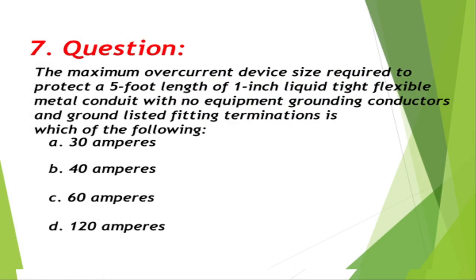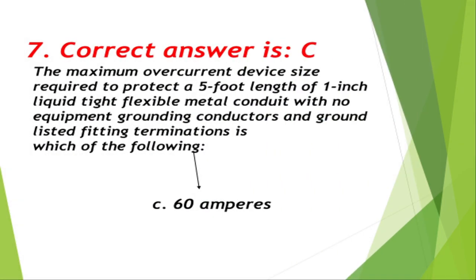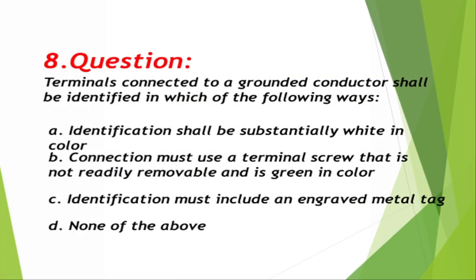Question number 7: The maximum overcurrent device size required to protect a five-foot length of one-inch liquid-type flexible metal conduit with no equipment grounding conductors and grounded listed fitting terminations is: A. 30 amperes, B. 40 amperes, C. 60 amperes, D. 120 amperes. Correct answer is C, 60 amperes.